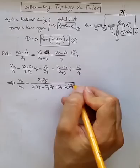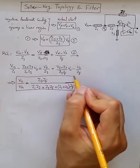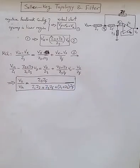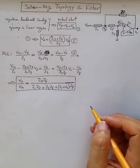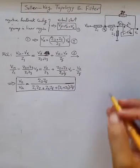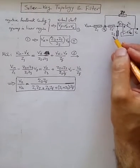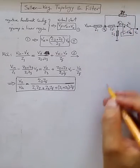Now, the significance of this voltage transfer function from input to output is, let's say if we select, for example, Z3 to be a capacitor, and Z1 and Z2 to be resistors, and ZF to be a capacitor.